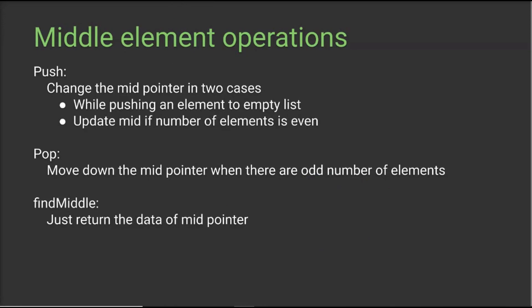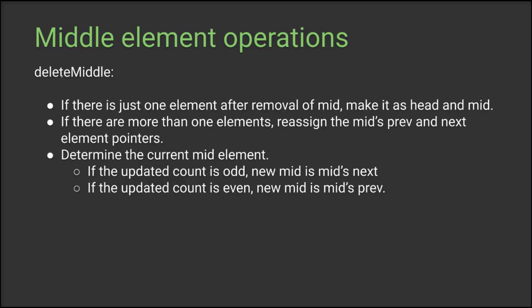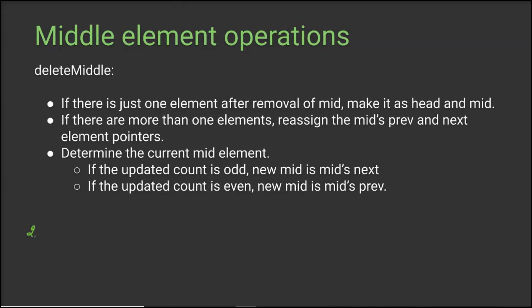The find middle function is very straightforward — we already have the mid pointer, so we just have to return the data present in the mid pointer. For the delete middle function, you have to consider a few scenarios. If you only have two elements in the stack, the mid pointer will be pointing to one element, and when you call delete middle, that element has to be removed, leaving just one element in the stack. We should ensure to make that remaining element both the head and the mid.